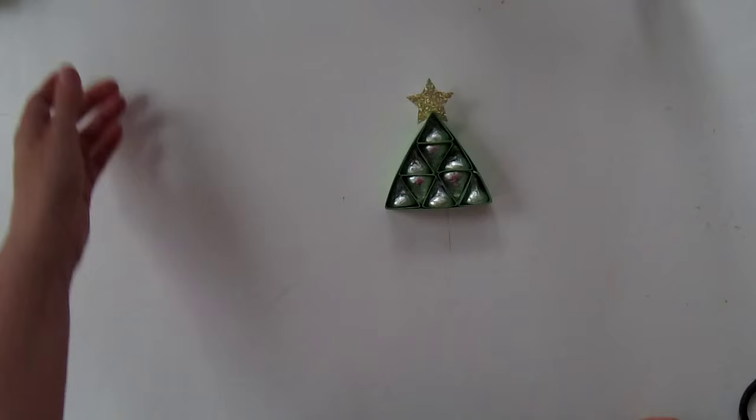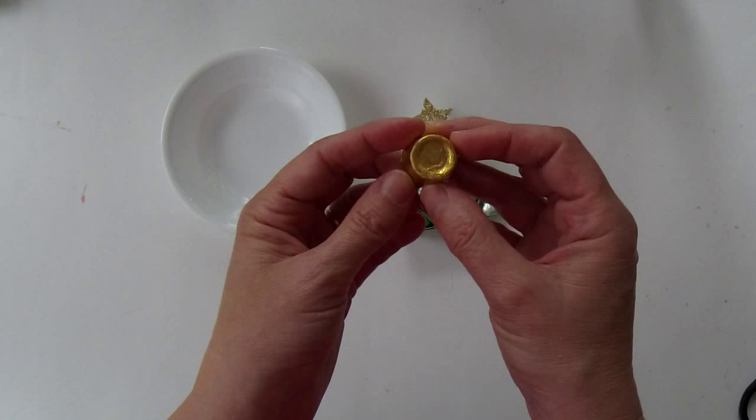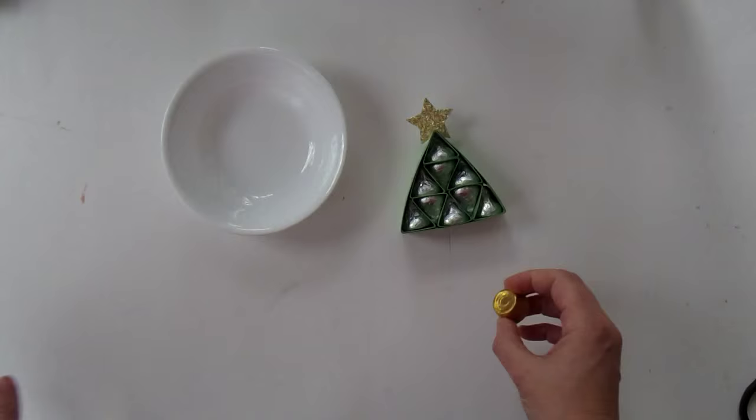So last but not least, this was a suggestion by someone on my blog. She used Rolo's as the base. I used to use nuggets as the base, but this year we're going to use Rolo's. So you notice the Rolo has a little dimple and you can use one of these stampin dimensionals. These are little kind of a foam hexagon.